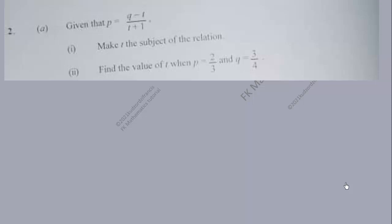Alright, so this is question number two and this is on change of subject. This is the 2021 question two of WAEC mathematics. Part (a): given that p is equal to q minus t over t plus one, make t the subject of the relation.